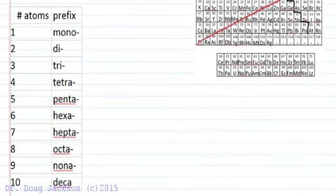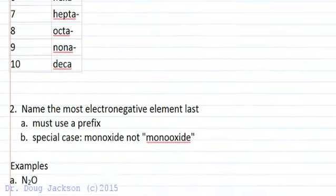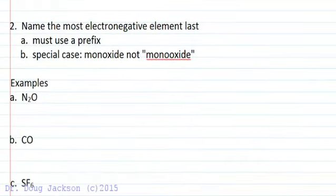So for one through ten atoms. The second thing we must do is name the most electronegative element last, and we have to use a prefix no matter how many there are. And then a special case when it's an oxide, we use monoxide instead of monooxide - we drop one of the o's and just use monoxide. We'd much rather have it sound monoxide than monooxide.